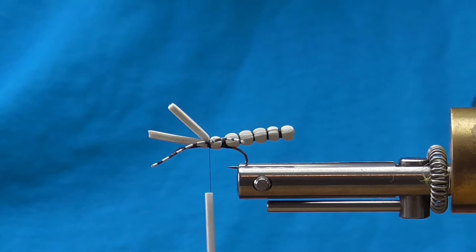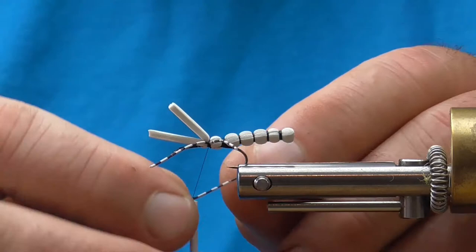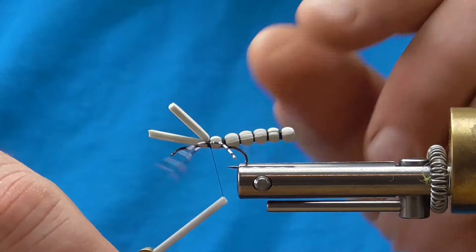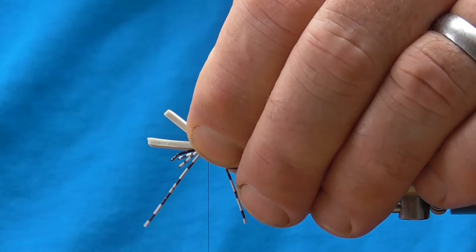And again, the way I like to secure rubber legs, I will actually wrap that leg around my thread and then bring that thread up and over. There. So we are in good shape with our legs on.